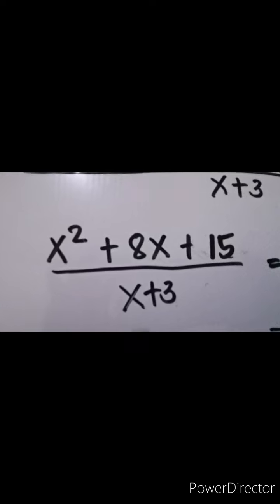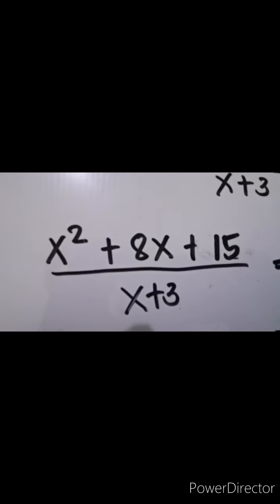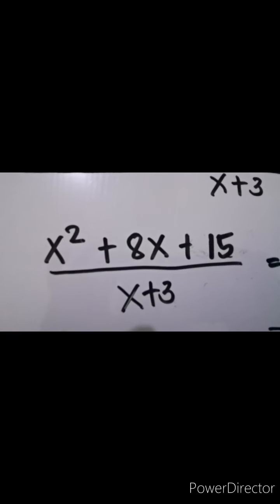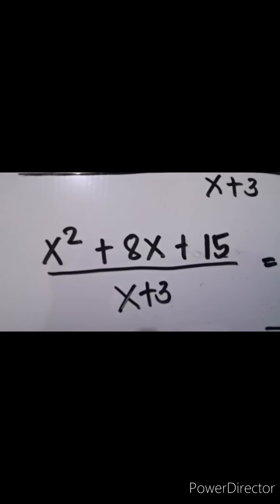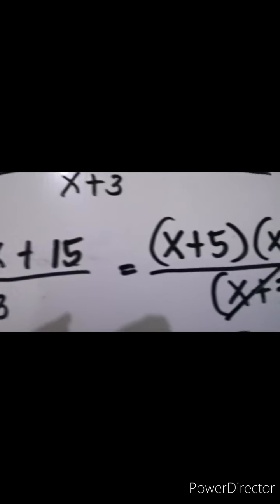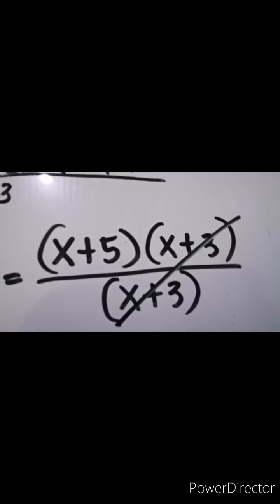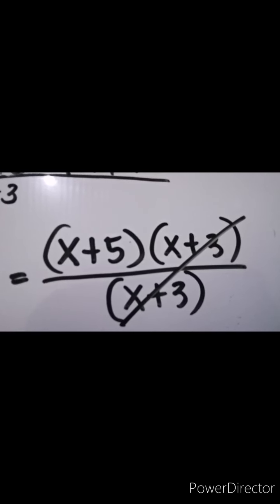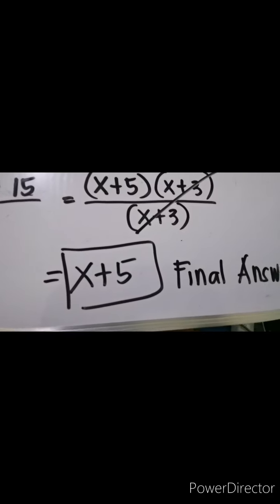So our simplified form is x squared plus 8x plus 15 over x plus 3. Next, factor out x squared plus 8x plus 15 by trial and error. The factors of 15 are 3 and 5, which when added give 8. So we have the factors (x plus 5)(x plus 3) over x plus 3. Since x plus 3 is common, we can cancel it out — divide them — and the final answer is x plus 5.